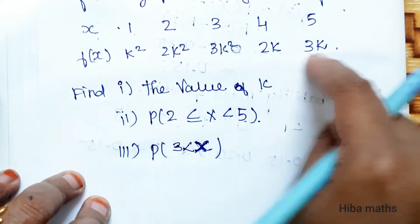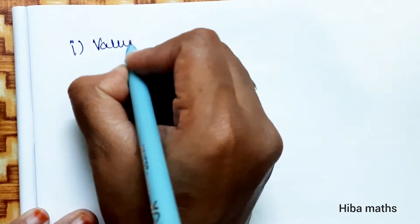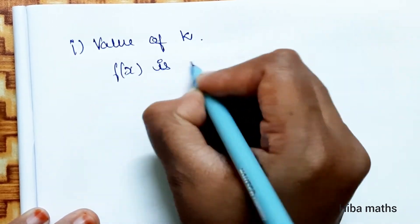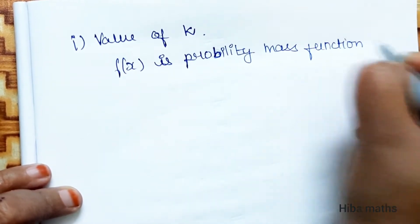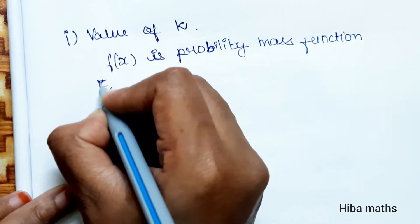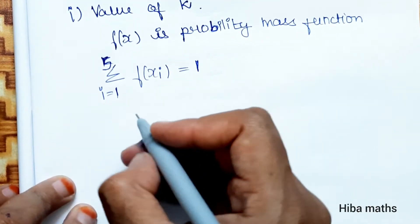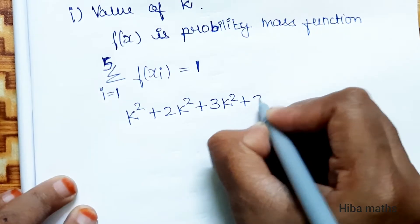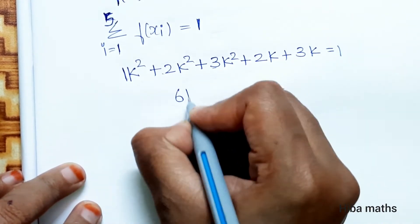Since f(x) is a probability mass function, the summation of f(x) for i = 1 to 5 must be equal to 1. So we add all f(x) values and set the answer equal to 1: k squared plus 2k squared plus 3k squared plus 2k plus 3k equals 1.